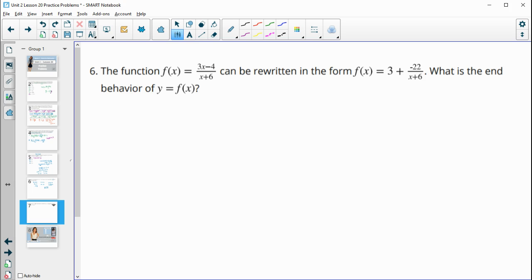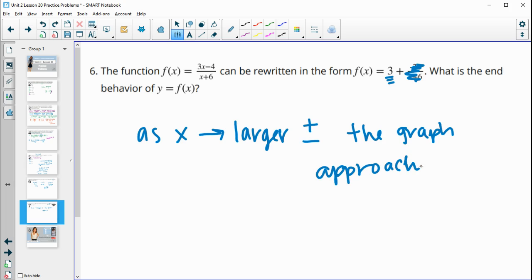And then number six, the function F of X equals three X minus four over X plus six can be rewritten like this. What is the end behavior? Remember the end behavior is in front of this remainder portion because as X gets really large. So if you plugged like a million in here, you'd have negative 22 divided by a million and that's practically zero. So at very large values of X, this graph is going to be approaching three. So as X approaches, so as X gets larger and larger in either the positive or negative direction, larger positive or larger negative, the graph or F of X approaches three.